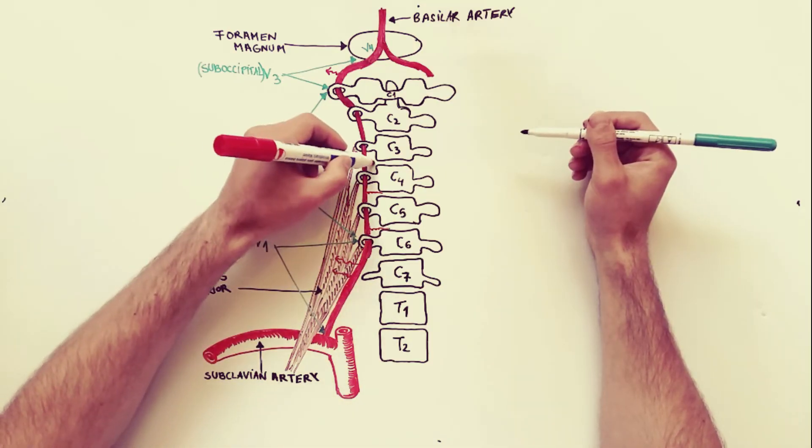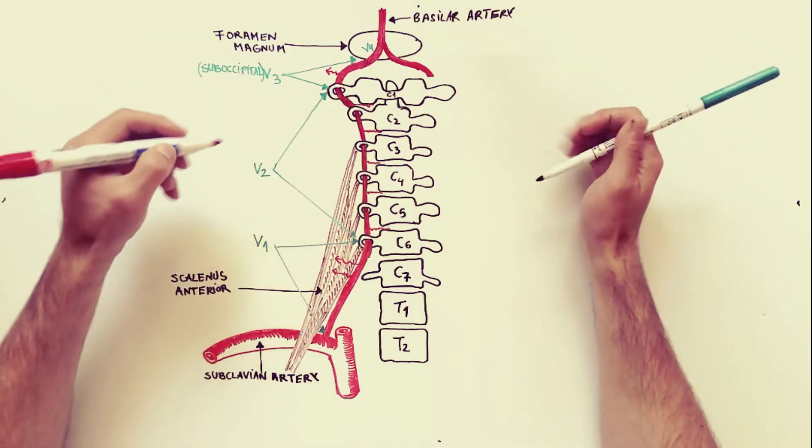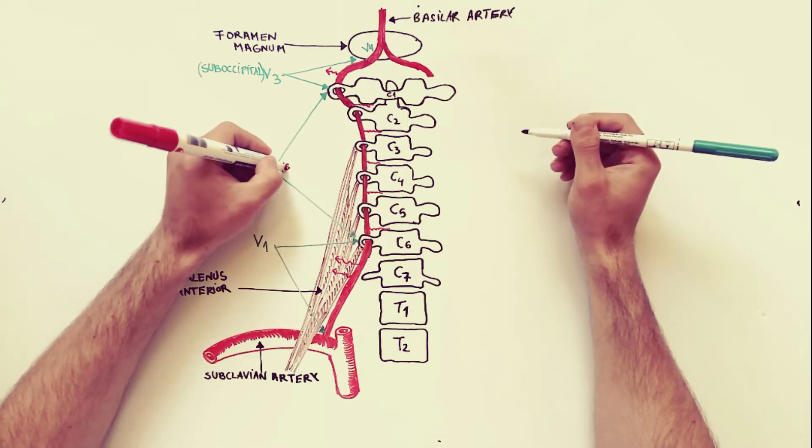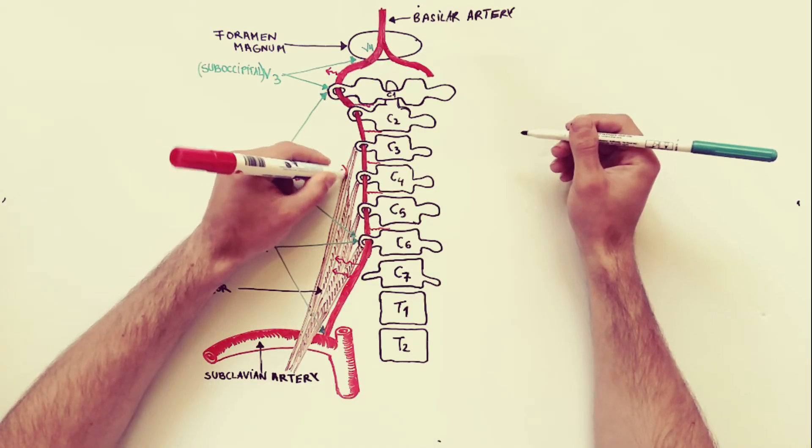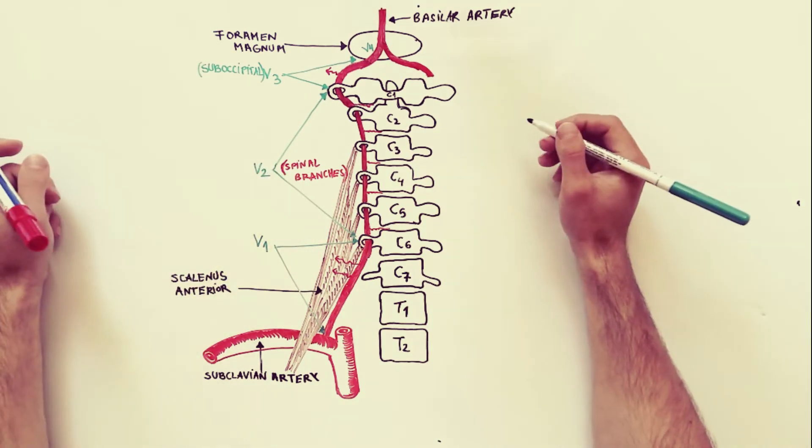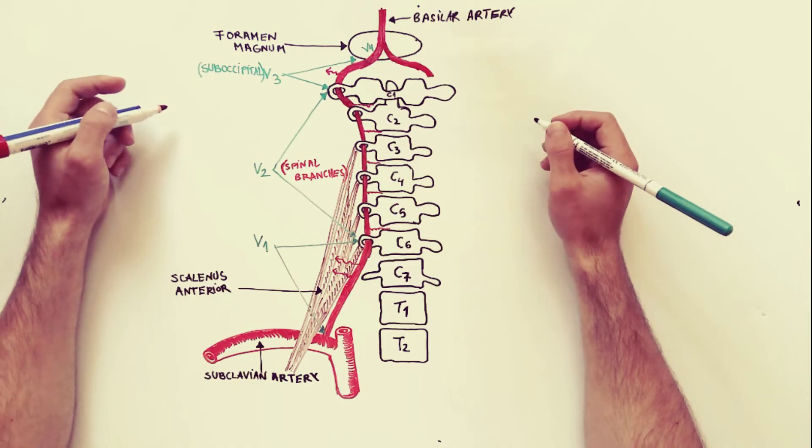The spinal branches arise from the second, or the vertebral part, and enter the vertebral canal through intervertebral foramina to supply the upper five or six cervical segments of the spinal cord.